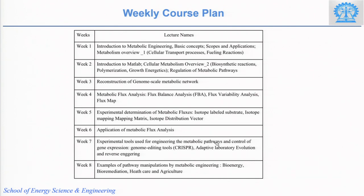Once you have the metabolic model and the organism-specific metabolic pathway, you can do metabolic flux analysis, flux balance analysis, and flux variability analysis. You can also determine metabolic fluxes experimentally using a technique based on isotope-labeled substrates. The techniques you will use include isotope mapping matrices, isotope distribution vectors, and isotope-labeled metabolic flux analysis, applied through different examples.